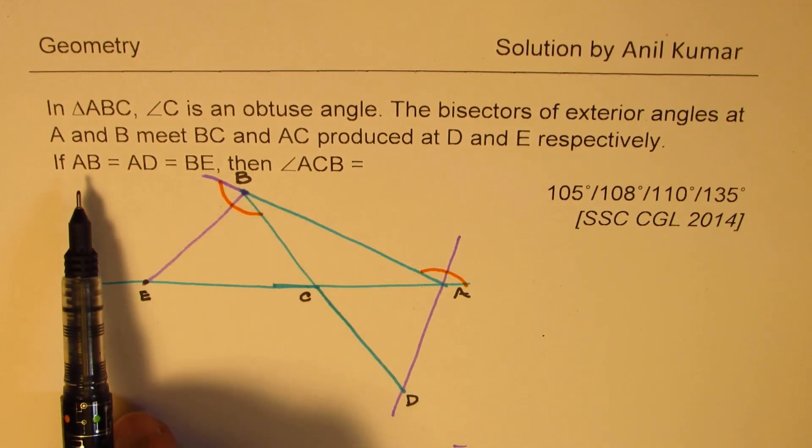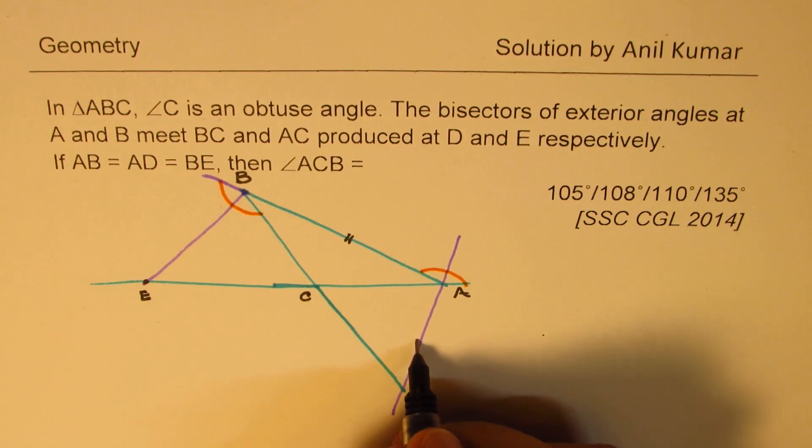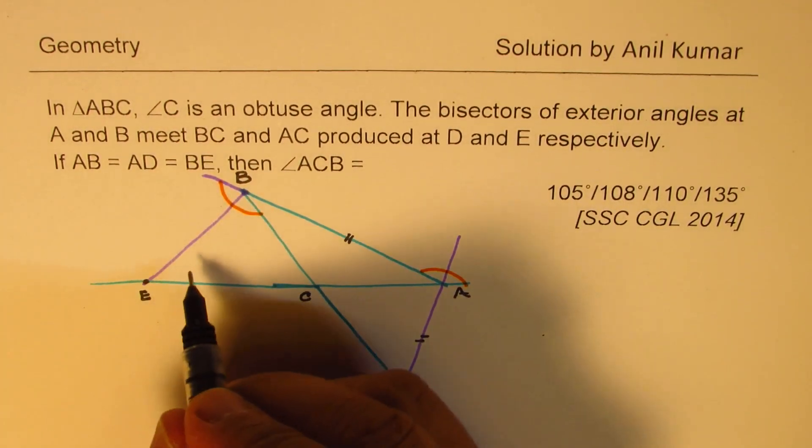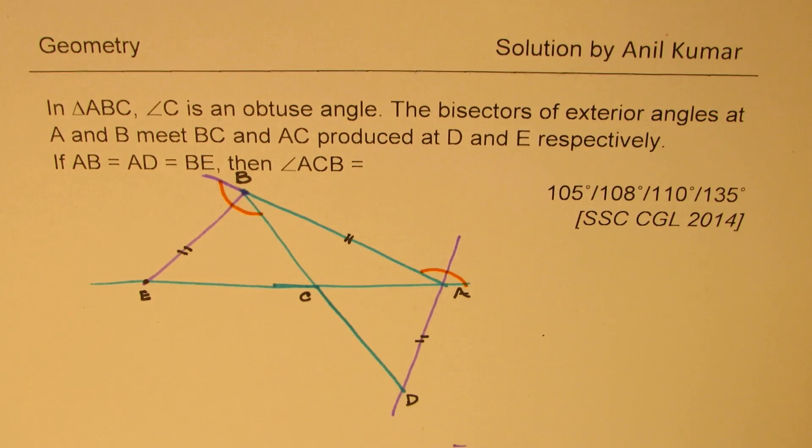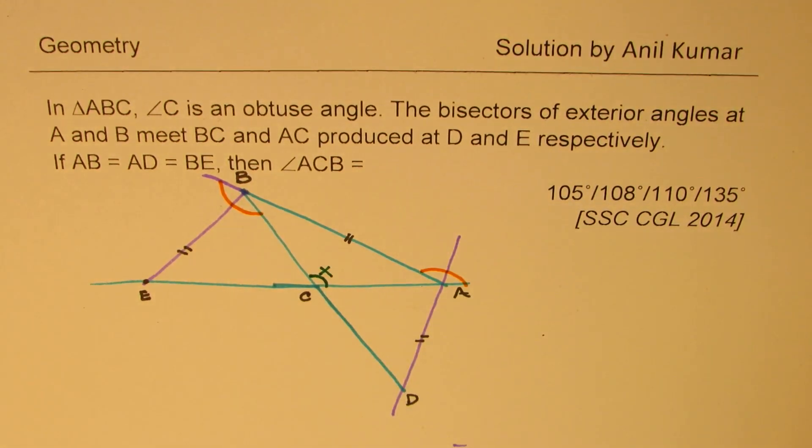Another thing which is given to us is AB is equal to AD and that is also equal to BE. So, of course, this diagram is not to the scale. However, you understand what we're trying to do. What we need to figure out is this angle C. This is X. We don't know. We need to figure out this angle C. Perfect. So that is the situation. I hope now you can pause the video and answer the question.